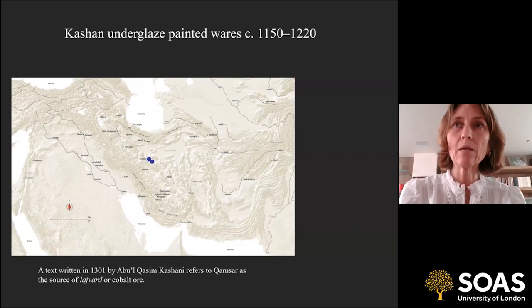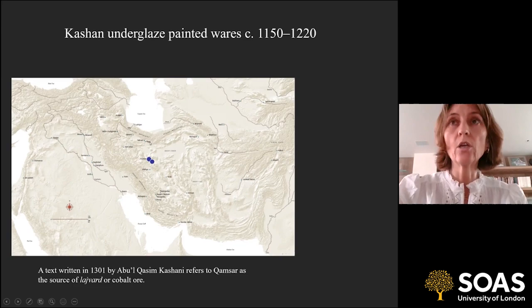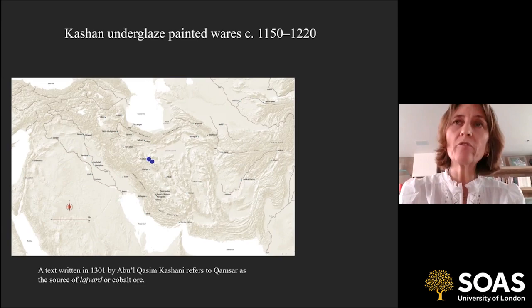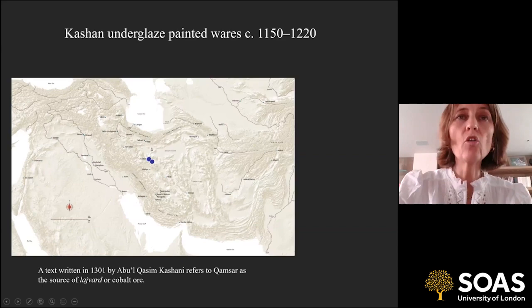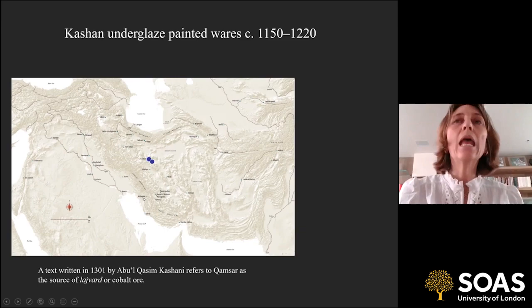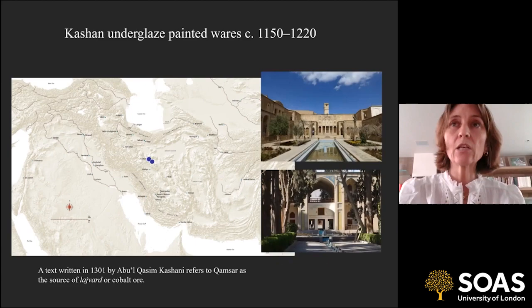Abulqasim refers to cobalt as Lajvard, the Persian word for Lapis Lazuli. Kashan becomes a center of mass production of sophisticated luxury glazed ceramics from around the mid-12th century for another 150 years. It's important geographically as it sits at the crossroads of east-west and north-south trade routes, making it commercially significant. It becomes home to very successful merchants exploiting these trade routes, bureaucrats working within the Seljuk administration, and a rich religious life.